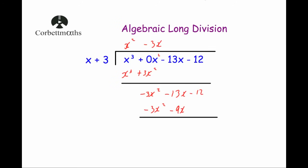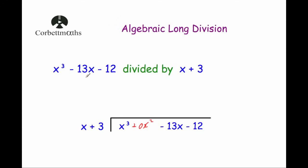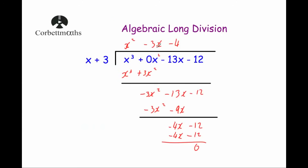Subtract again: minus 3x squared take away minus 3x squared is 0. Minus 13x minus (minus 9x) means we add 9x on, giving minus 4x. And then minus 12. Divide: minus 4x divided by x is minus 4. Multiply: minus 4 times x is minus 4x, and minus 4 times 3 is minus 12 — no remainder. The answer is x squared minus 3x minus 4.